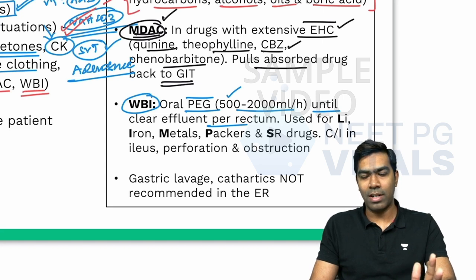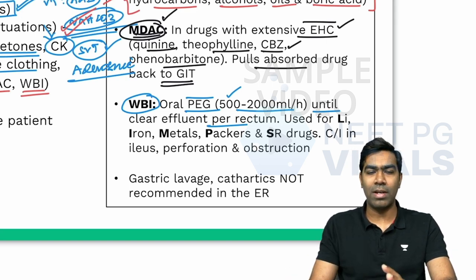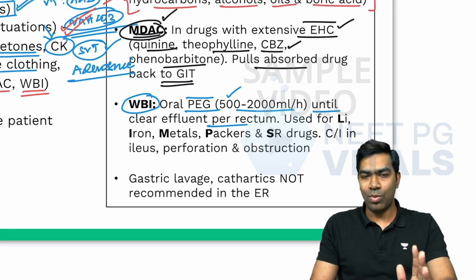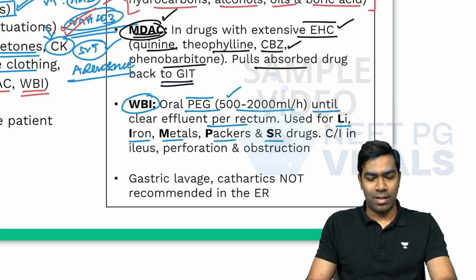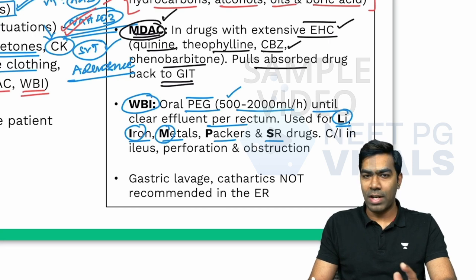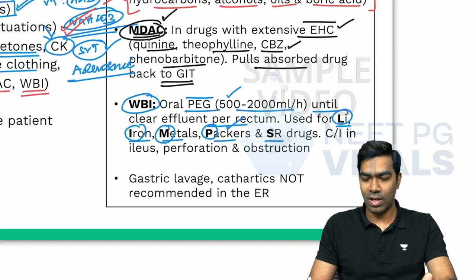What you're trying to do is increase GI motility so that any unabsorbed drug anywhere in the GIT is pulled out via the rectum. The indications can be remembered by the mnemonic LIMPS: L for lithium, I for iron, M for other heavy metals, P for packers — body packers who conceal drugs within themselves — and S for sustained release preparations, where whole bowel irrigation is effective.